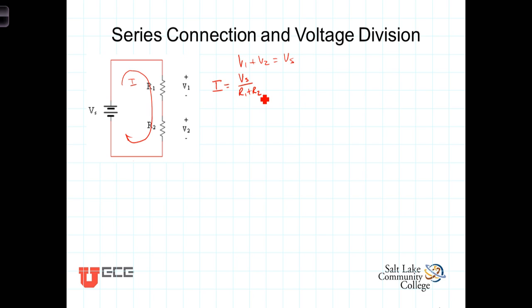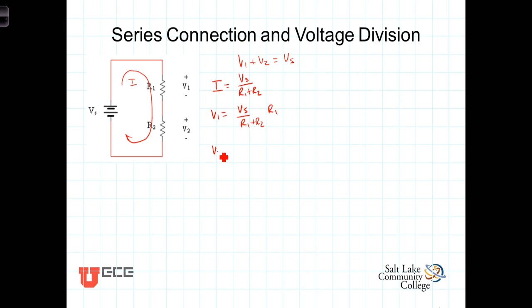From that, we can write expressions for V1 and V2. V1 is just the current flowing through R1 times R1, or Vs over R1 plus R2 — that's the current — times R1. And similarly, V2 is equal to the current Vs over R1 plus R2, times R2.